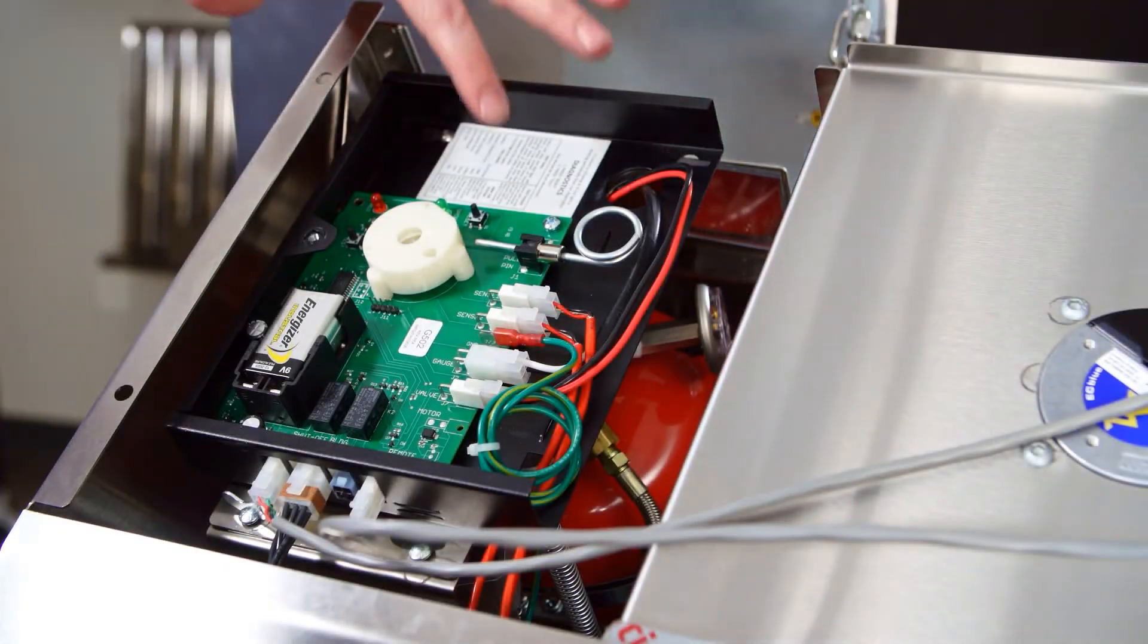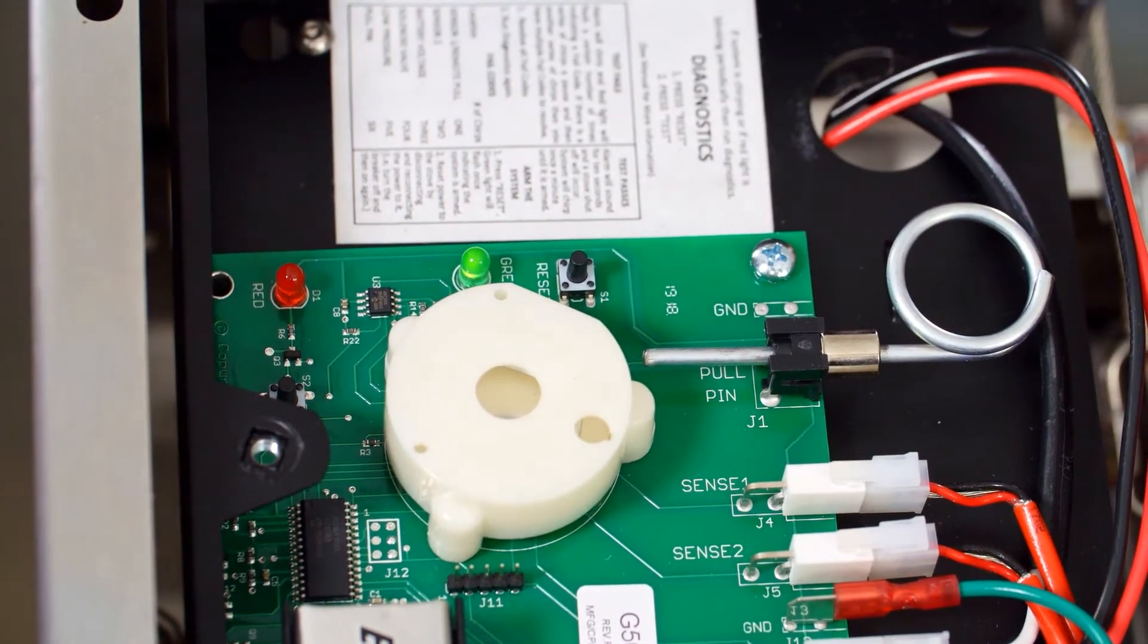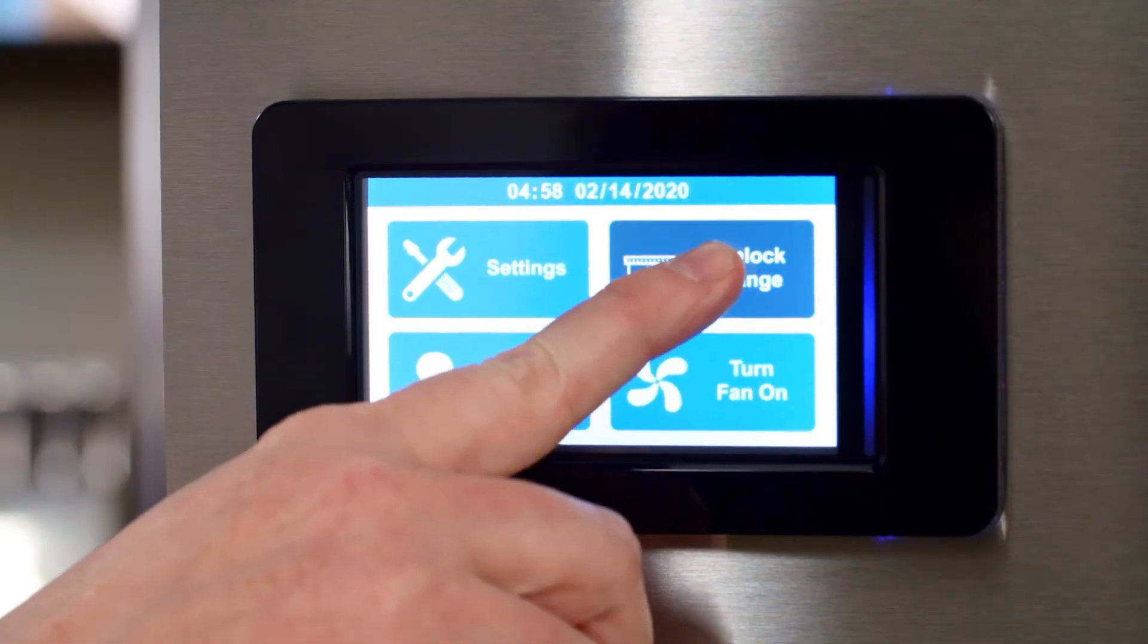Next, push and release the reset button on the control board. If you see a green light, leave the pull pin in the circuit board socket. If not, refer to the IOM for troubleshooting.